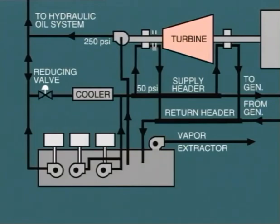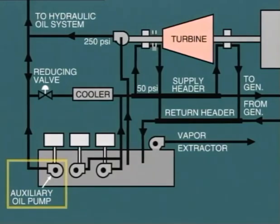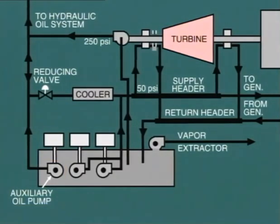During start-up and shutdown, a motor-driven high-pressure oil pump is used. This supplies both the hydraulic oil system and the lube oil system. In this arrangement, this pump is known as the auxiliary oil pump since it is the main standby to the shaft-driven pump.